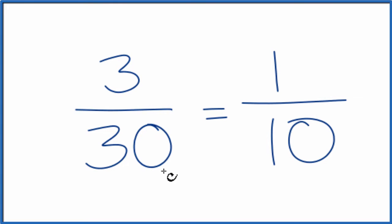These are what we call equivalent fractions. 3 divided by 30 and 1 divided by 10, you get the same number, 0.1. It's just that we've simplified the fraction 3/30 down to 1/10.